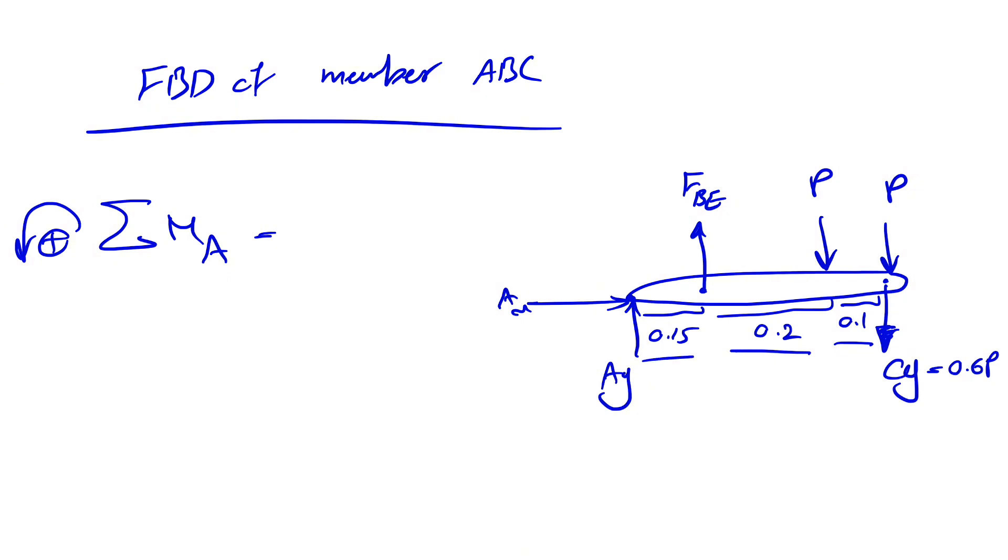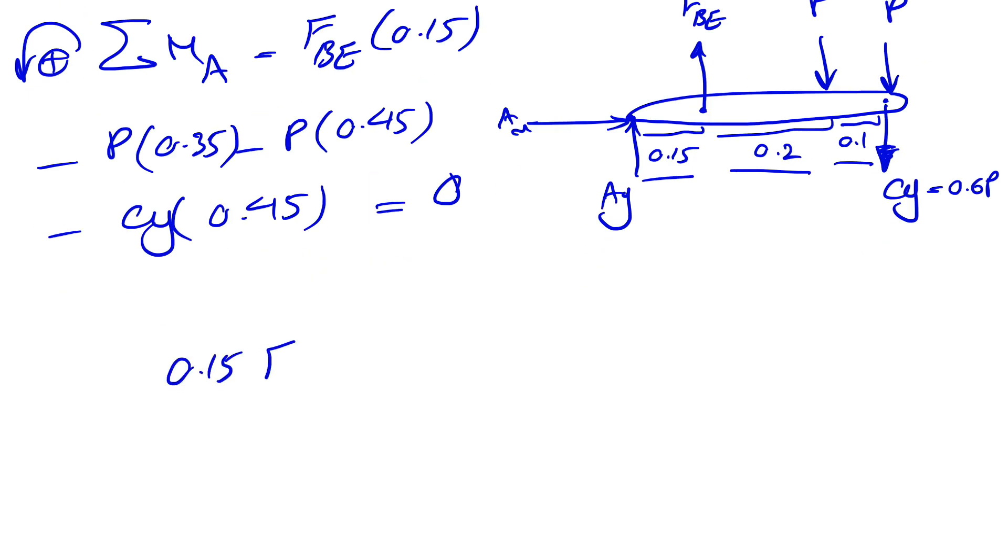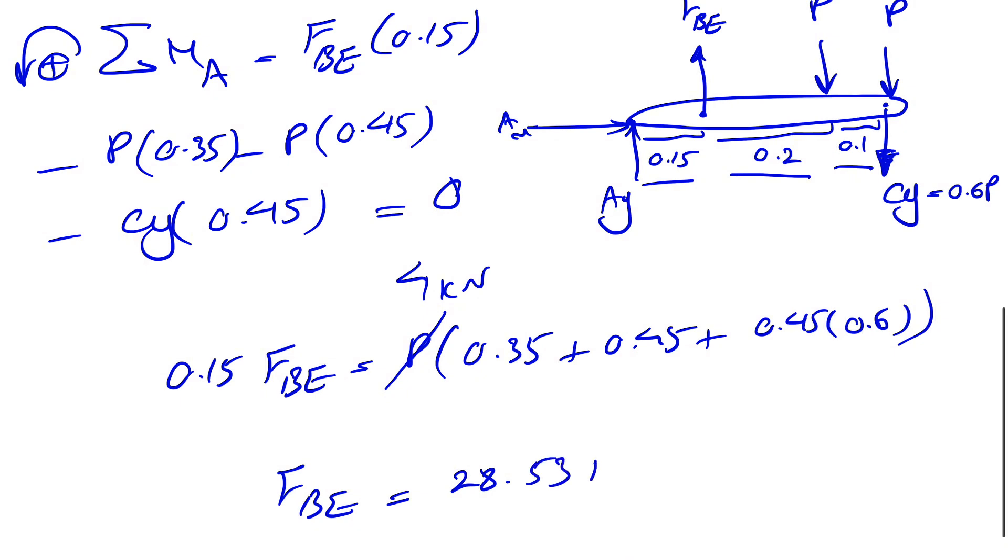The rest is pretty easy. We have the moments of FBE, which as we can see about point A is counterclockwise, so FBE times 0.15 minus P times 0.35 minus P times 0.45 minus Cy times 0.45. Our Cy we know is 0.6P. So basically 0.15 FBE equals—we can factor P—0.35 plus 0.45 plus 0.45 times 0.6, and we know our P is 4 kilonewtons. If we calculate our FBE, we're going to get 28.53 kilonewtons.